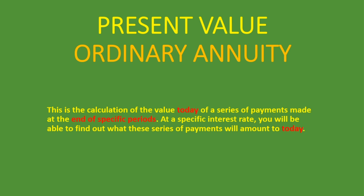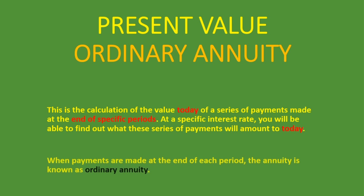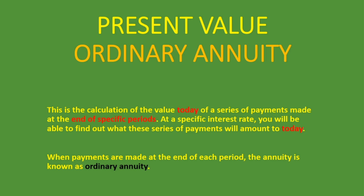Why ordinary annuity? When payments are made at the end of each period, the annuity is known as an ordinary annuity. Whenever you have payments being made at the end of specific periods or particular periods, it is known as an ordinary annuity. An annuity due is when payments are made at the beginning of the period, and we did those lessons as well — you'll find the links in the description below.